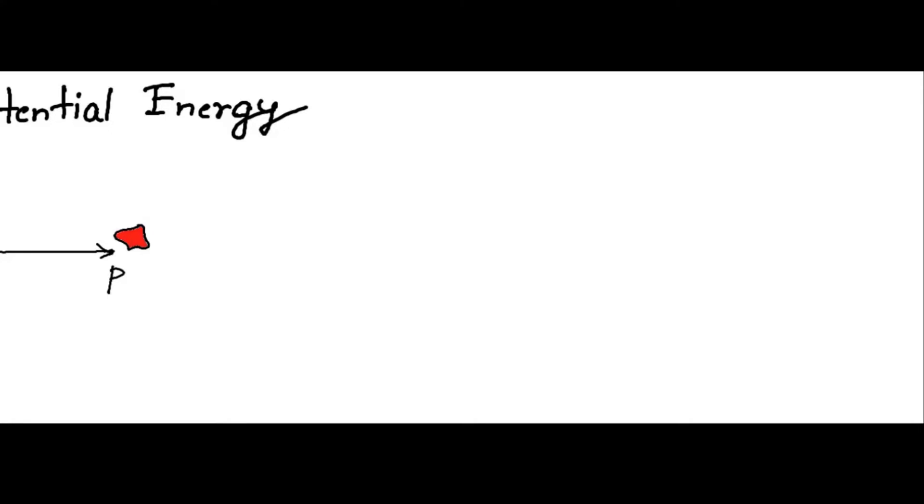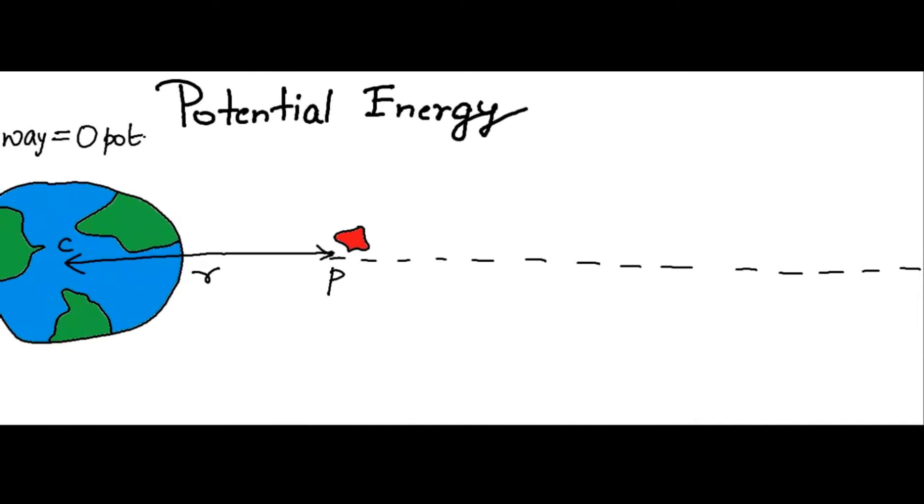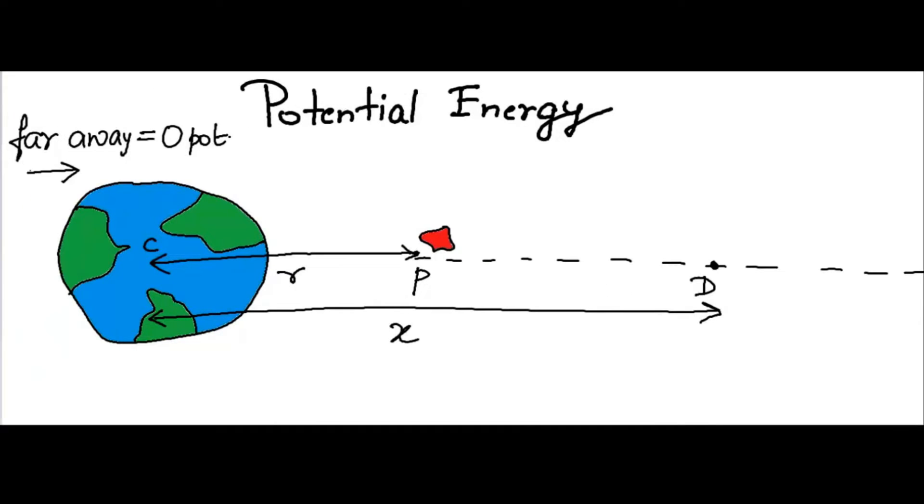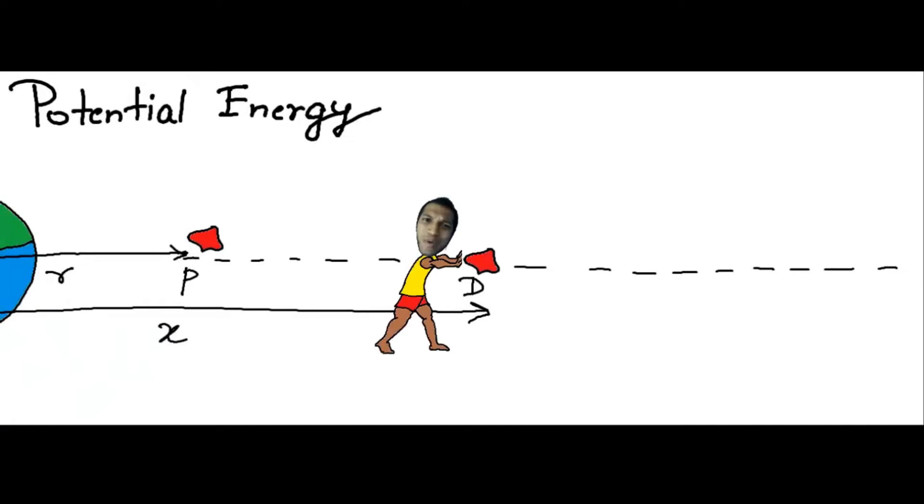To set up the integral, we choose a random point between far away and P. Let's call this point D. Take this direction to be positive. Write down the forces. Gravity is pulling it with force of gravity, and I am pushing it away with equal and opposite force, force of me.